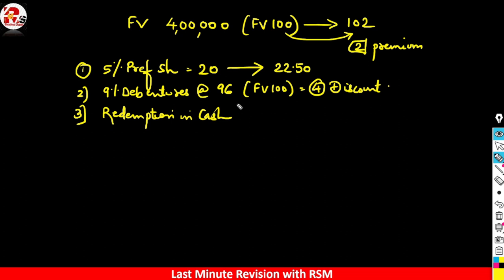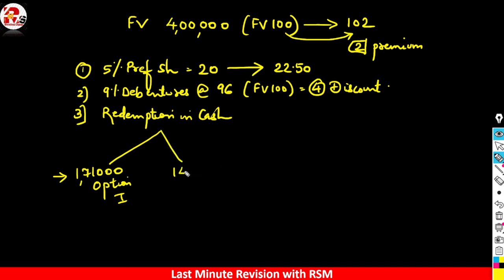This is the concept of conversion. In our questions, such scenarios appear with different numbers and percentages, but the concept is the same. In this example, 1,71,000 worth of debenture holders accepted option number 1. Then 1,44,000 debenture holders said they want option number 2. The remaining holders said they want cash — option 3.